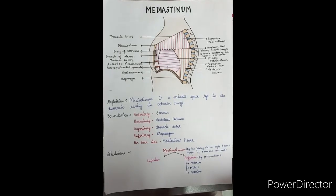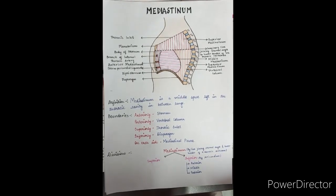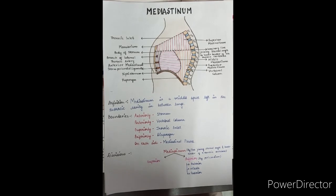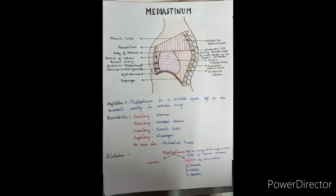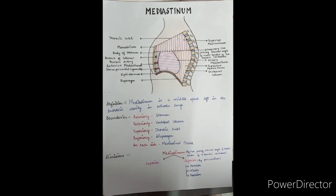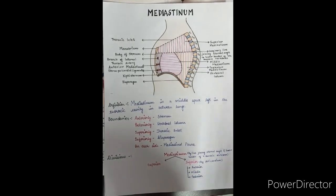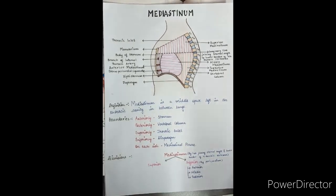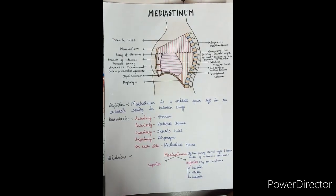Hi guys! Before starting with this video, let me tell you something. There are certain kinds of tumors that can grow their own teeth and hair. They are called teratomas. This is so surprising. Now, without wasting any time, let's start with the topic.